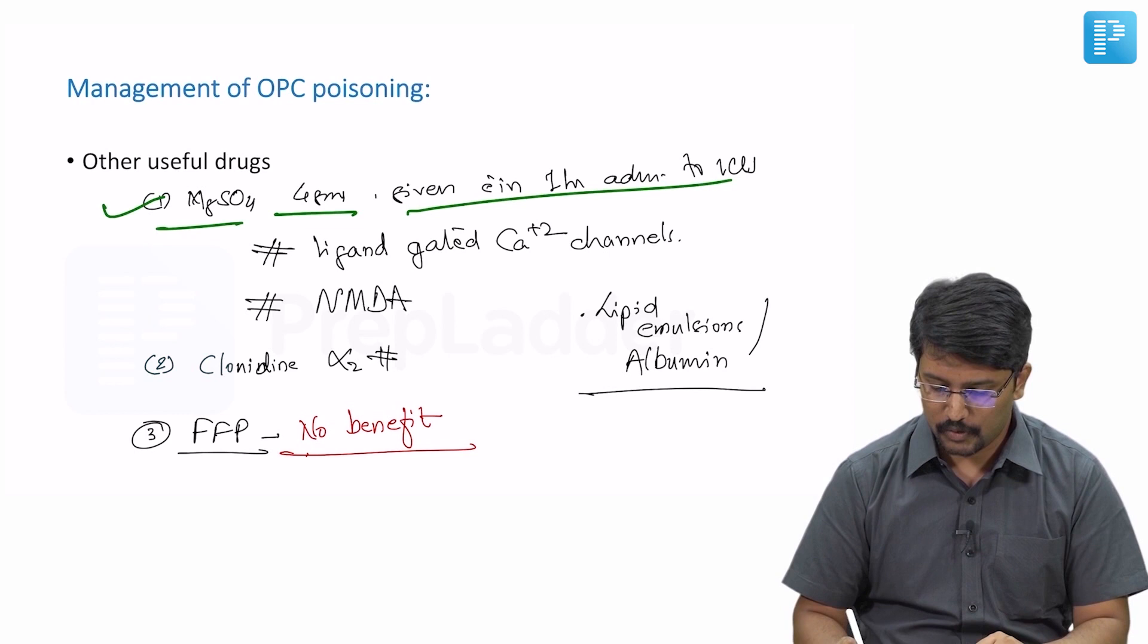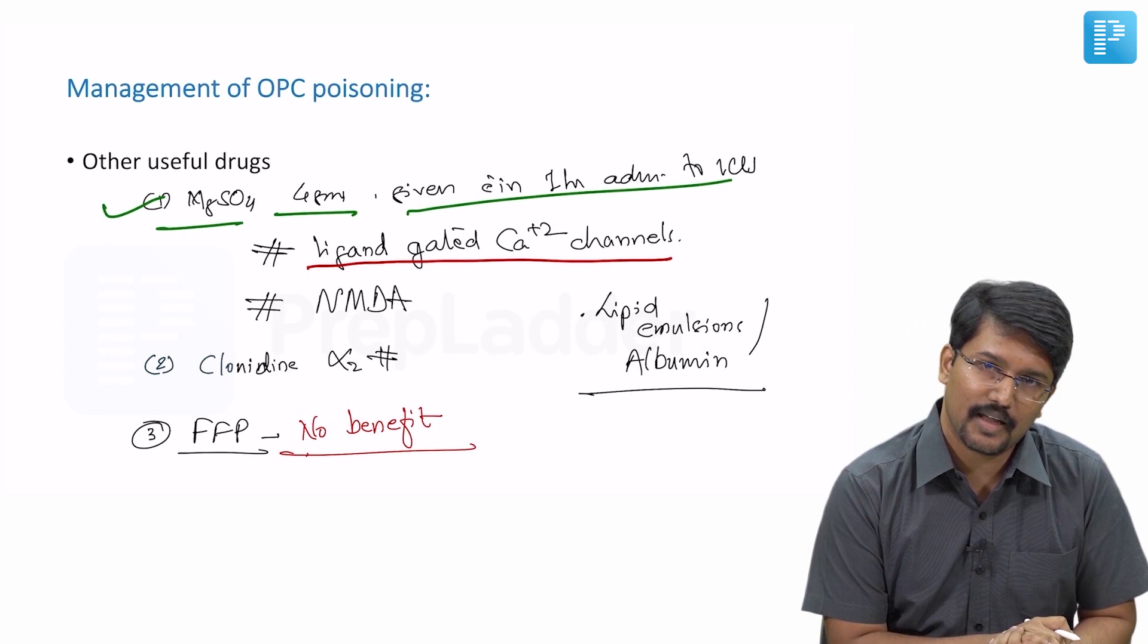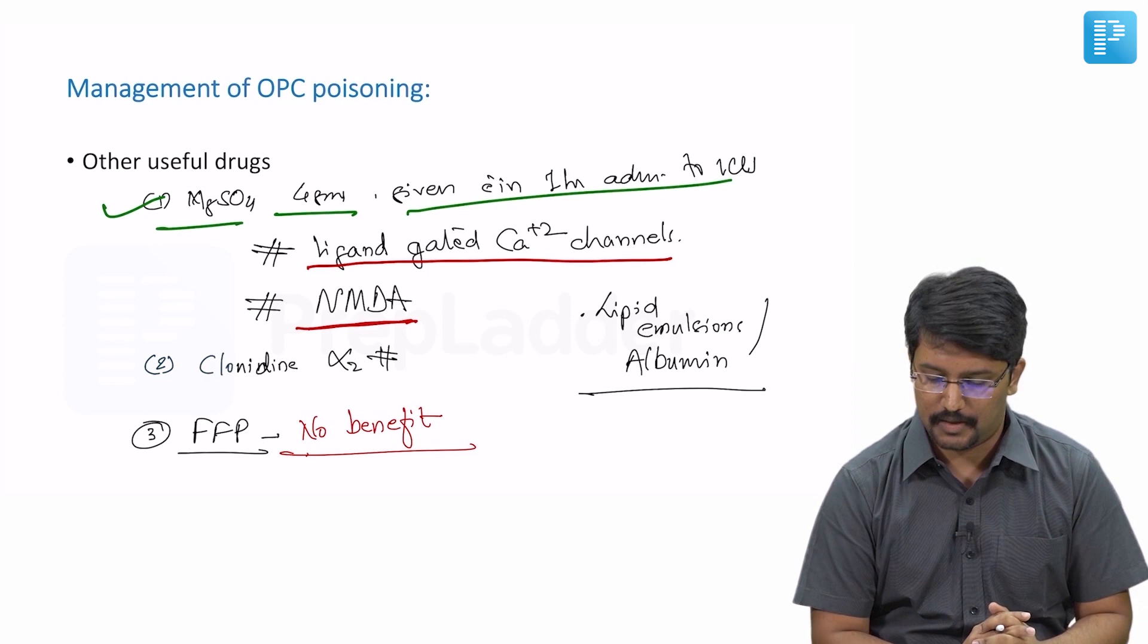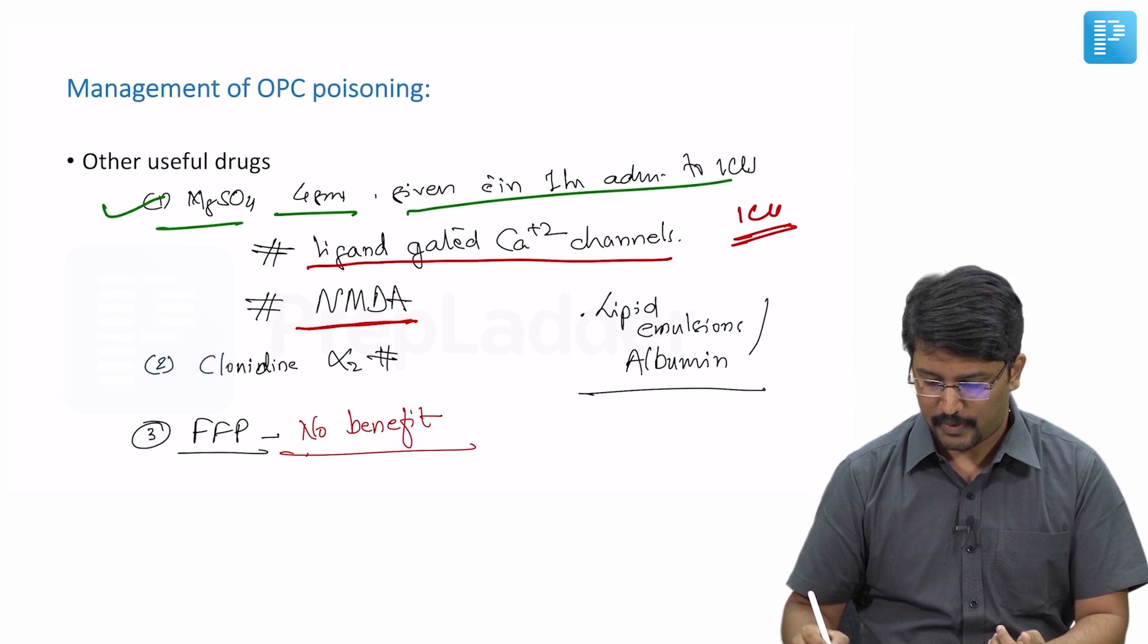And that is because it inhibits calcium-gated, ligand-gated calcium channels and it also inhibits NMDA receptors. Also keep in mind magnesium sulfate itself has some antioxidant properties. So all this put together, it is going to show some benefit in reducing mortality. Administration of this should be undertaken only in an ICU setting because of risk of respiratory paralysis.